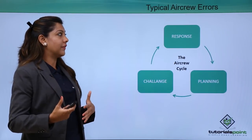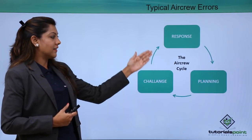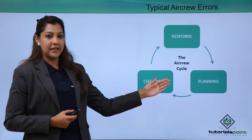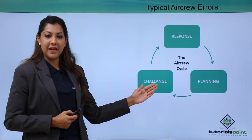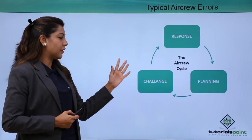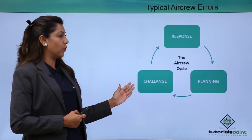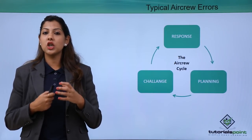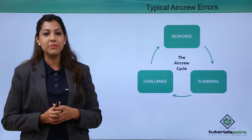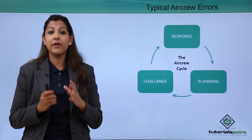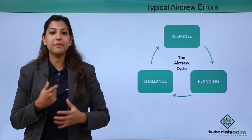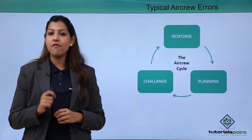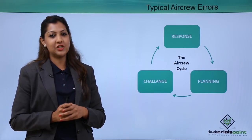Typical air crew errors follow a cycle: you need good planning for every flight — a plan of action to meet each challenge. You also need to wait for and actively get responses from the flight crew side, constantly communicating with fellow crew members to ensure they are alert. This cycle has to be followed for each and every flight.